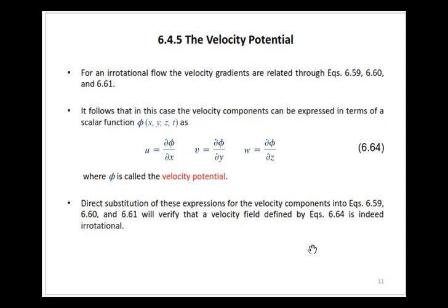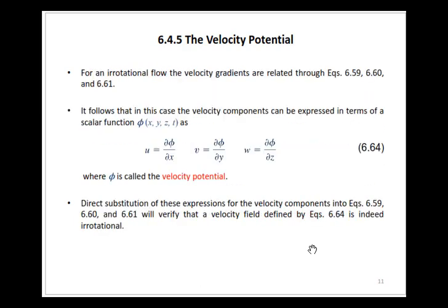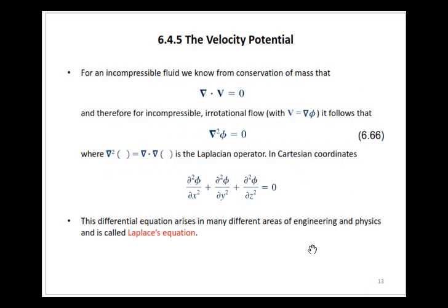Then we talked about velocity potential. If you have inviscid flow, we can represent that flow in terms of a scalar function phi, which is a function of x, y, z, and t, and it can be represented in all three dimensions. If we set velocity V equal to the gradient of phi, and then apply conservation of mass, we get an equation called the Laplacian equation.